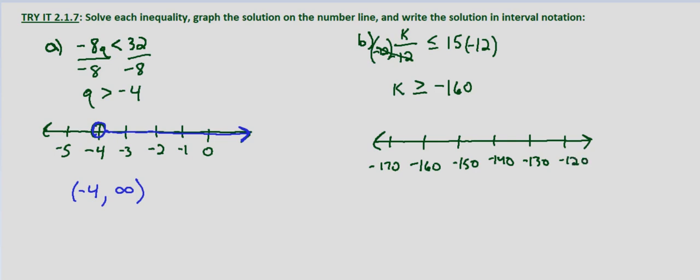Now with this one it's inclusive. So at negative 160 we want either a closed circle or a bracket. I'll go ahead and use a bracket here. Again a closed circle would work as well.